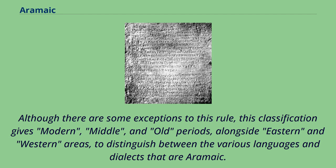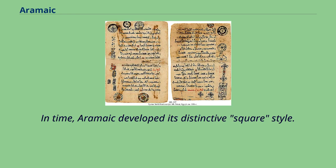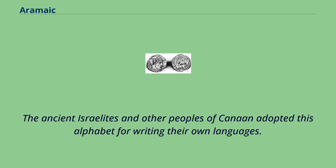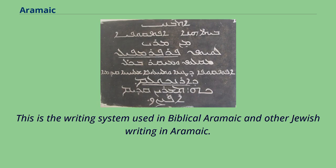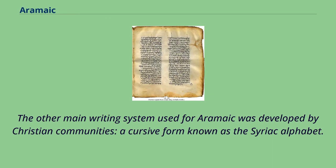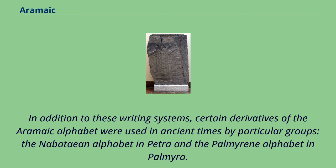The earliest Aramaic alphabet was based on the Phoenician alphabet. In time, Aramaic developed its distinctive square style. The ancient Israelites and other peoples of Canaan adopted this alphabet for writing their own languages, and it is better known as the Hebrew alphabet today. This is the writing system used in Biblical Aramaic and other Jewish writing in Aramaic. The other main writing system used for Aramaic was developed by Christian communities — a cursive form known as the Syriac alphabet. A highly modified form of the Aramaic alphabet, the Mandaic alphabet, is used by the Mandaeans. Certain derivatives of the Aramaic alphabet were also used in ancient times, such as the Nabatean alphabet in Petra and the Palmyrean alphabet in Palmyra.